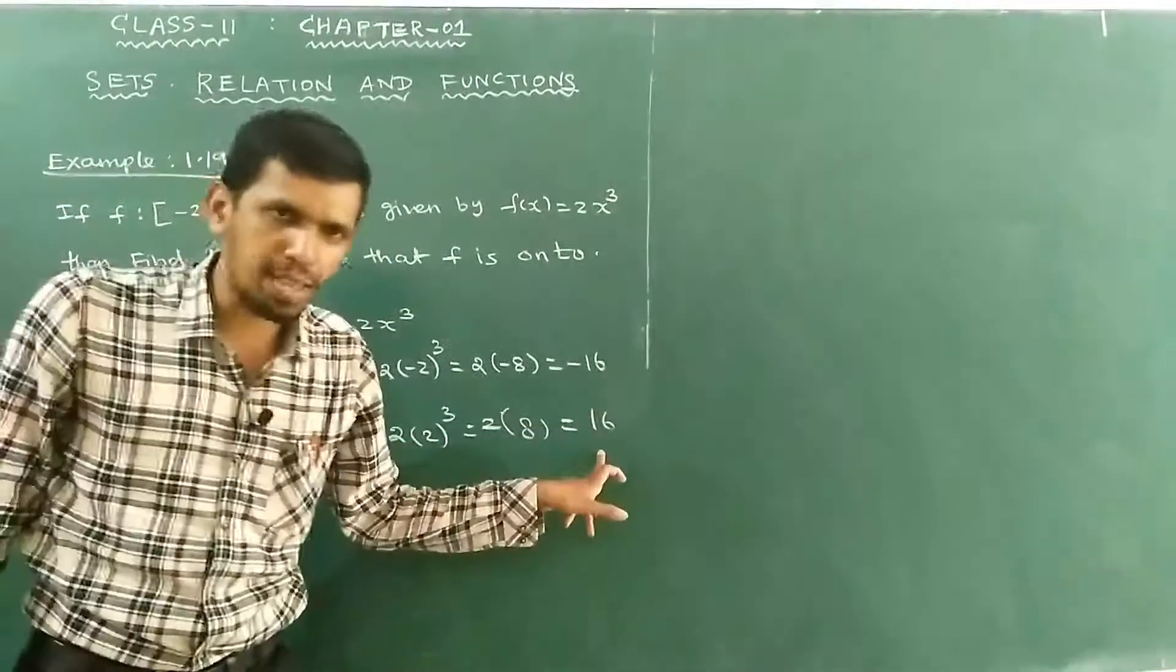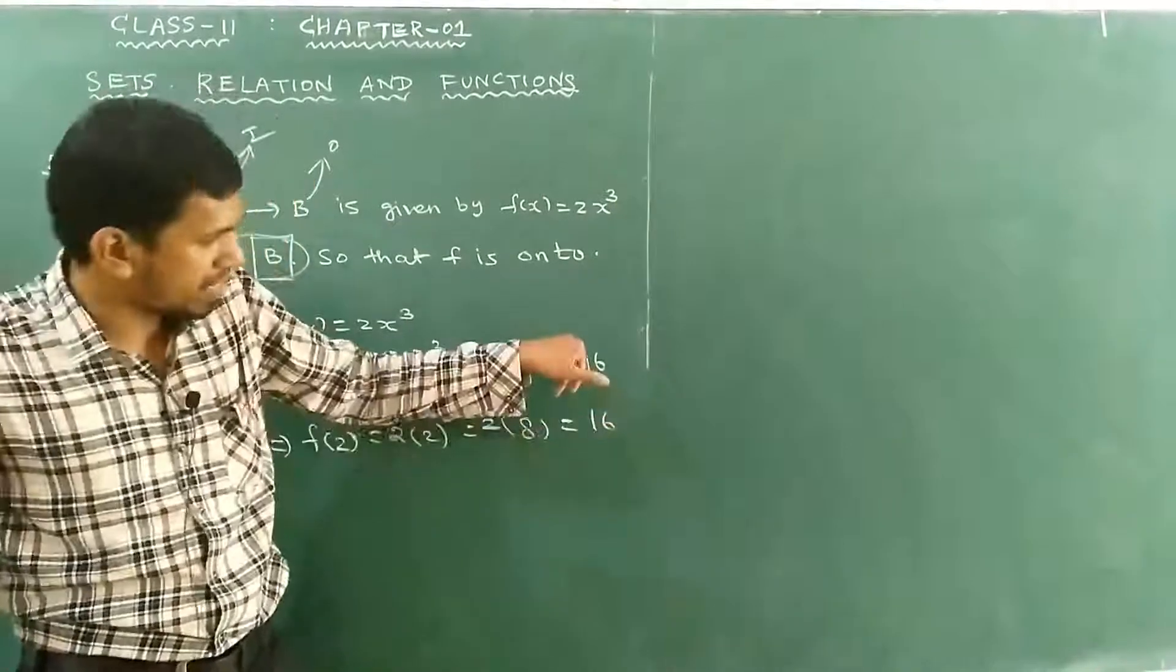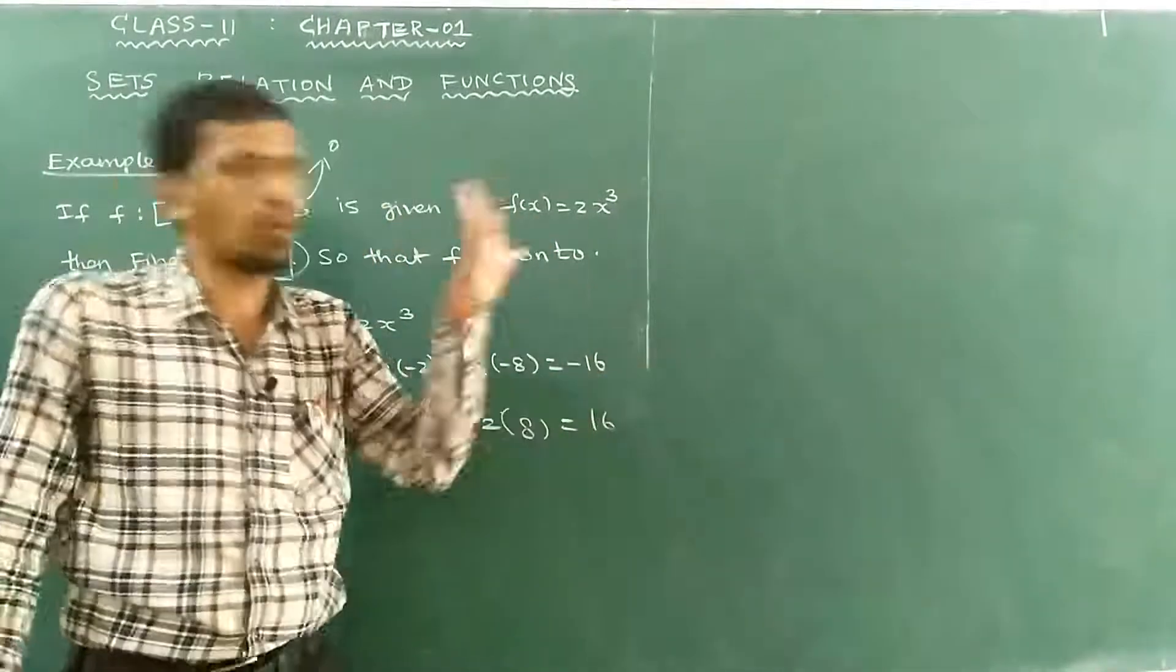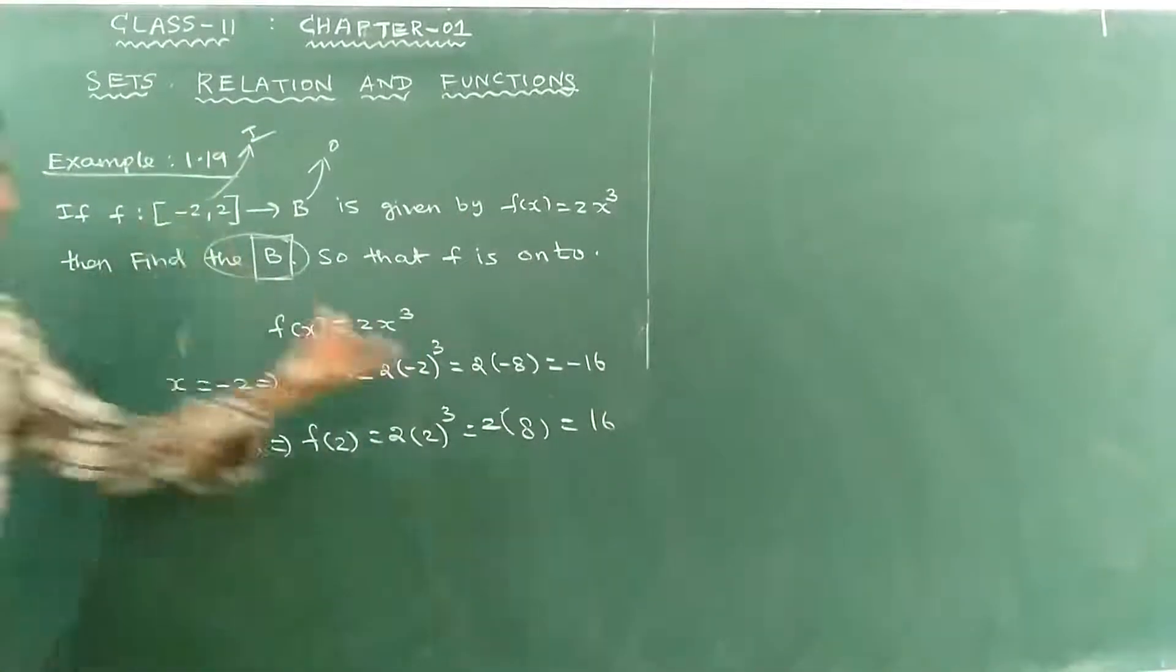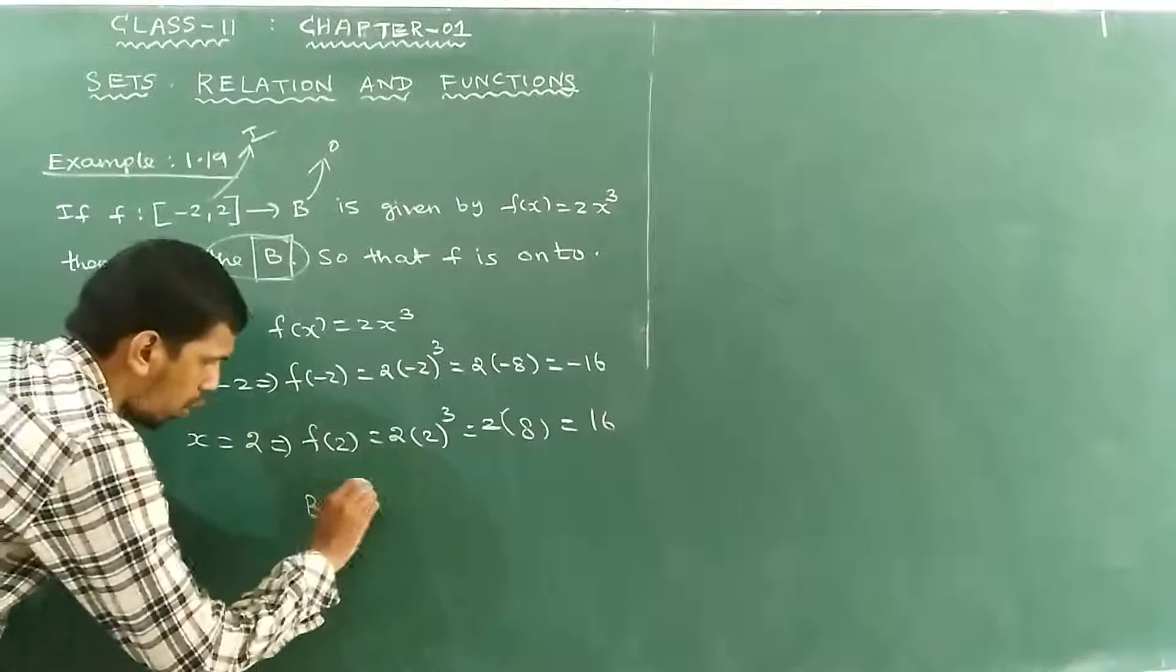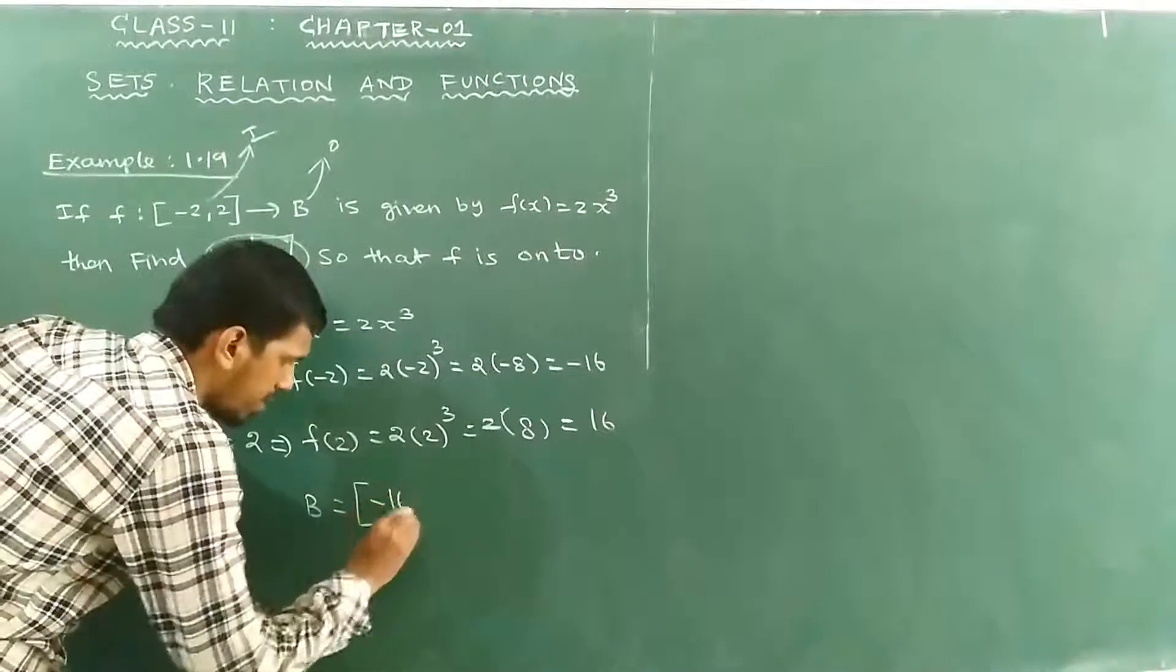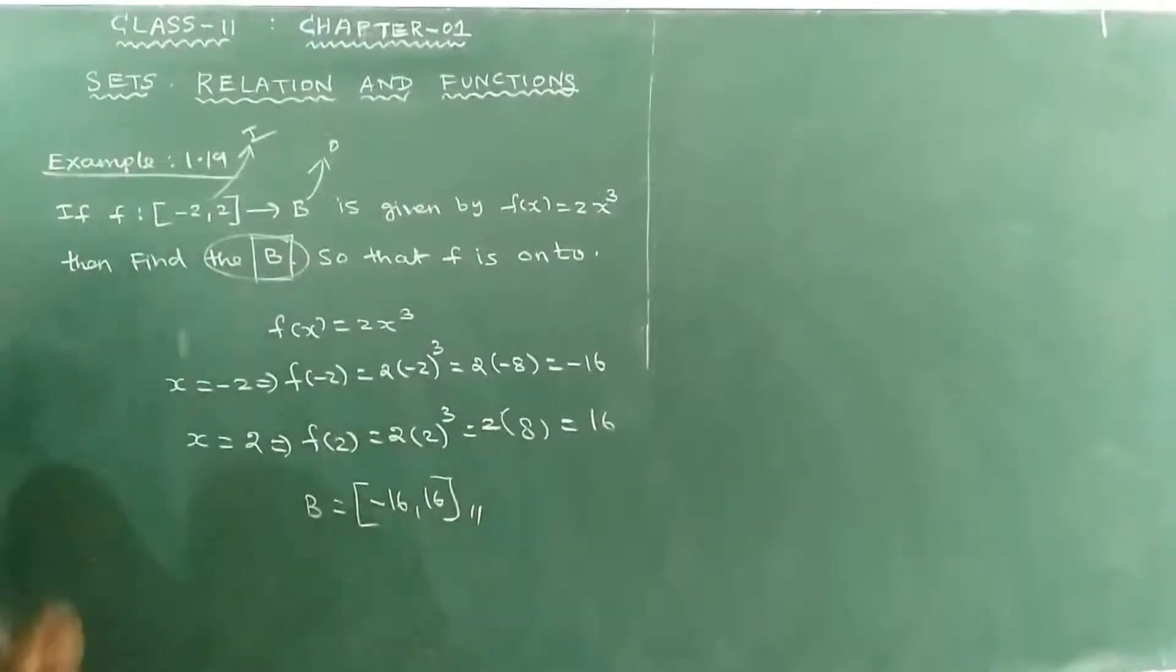So we put the maximum value here. Then if you put the value in B, it will be minus 8 to plus 8. So if you put the input here, then you will be B equal to the closed bracket [-8, 8]. That's the result.